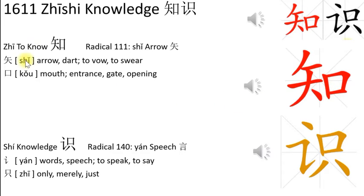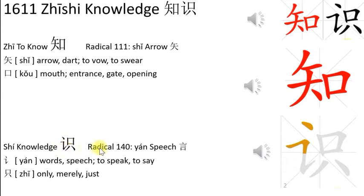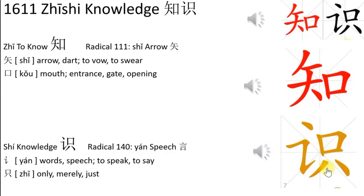知 means to know. The second character, 识, means knowledge. Its radical is speech — this is the short version of it — and 识 can also mean only, merely, or just.